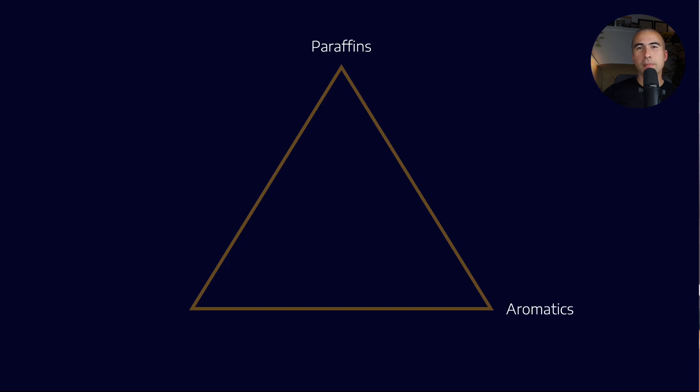We've got paraffins, aromatics and naphthenes. These are three very broad groupings for all of the molecules that are in a barrel of crude oil. Paraffins look like straight chains, aromatics have benzene rings and naphthenes also have ring structures as well. Now again broadly speaking the aromatics are toxic or carcinogenic and so we want to remove them as much as possible.